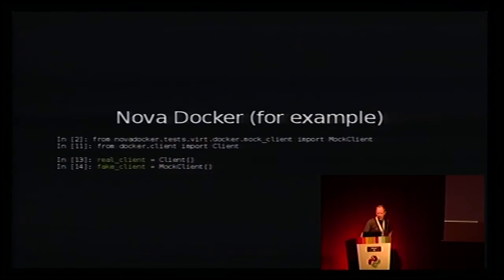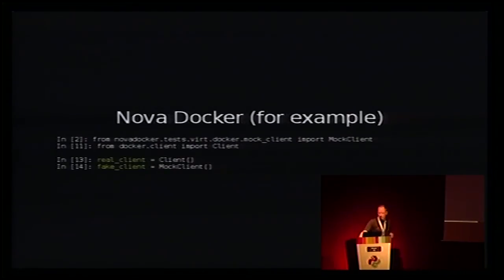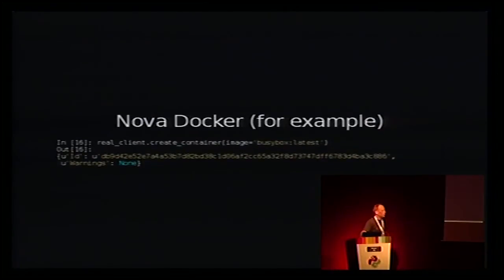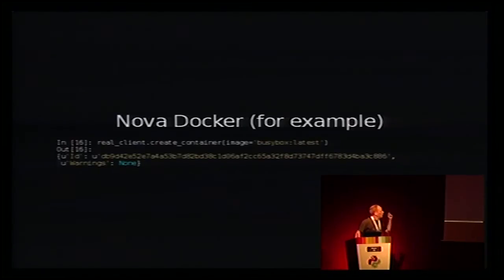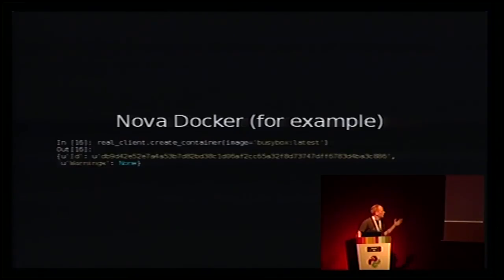They have implemented a fake Docker client, but it suffers from these problems — the fake has gotten out of sync with the real Docker client. They may never have been in sync because they don't run the tests against both the fake and the real client. Here's an example: we imported both the mock client from Nova Docker and the real client from Docker Py and instantiated them both. When you create a new Docker container using Docker Py, you supply the image name and it returns a dictionary containing the 64-digit container ID and a summary of any warnings.